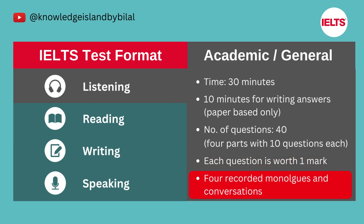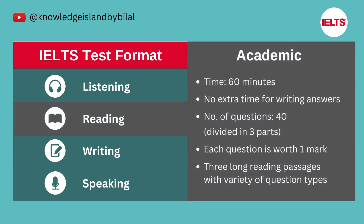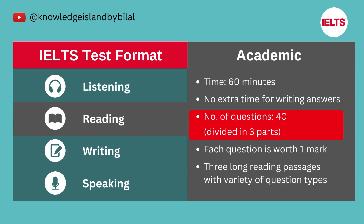Care should be taken when writing answers on the answer sheet, as poor spelling and grammar are penalized. You will listen to four recordings of native English speakers and then write your answers to a series of questions. In Academic Reading, you will have a total of 60 minutes to complete the test. There is no extra time given at the end for transferring answers — you must write the answers directly on the reading answer sheet. The reading section consists of 40 questions designed to test a wide range of reading skills, and each question is worth one mark.